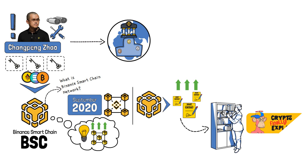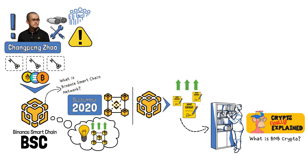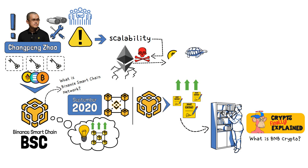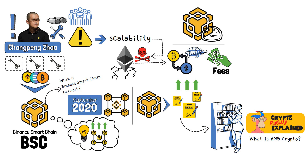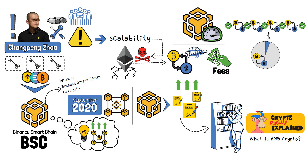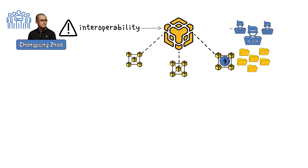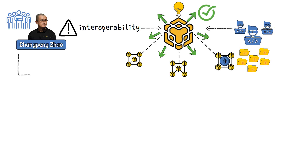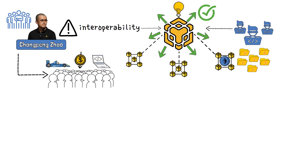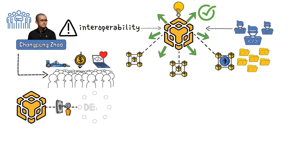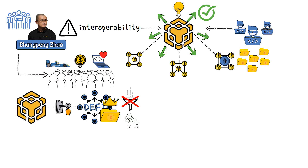One of the significant problems CZ and the Binance team aimed to solve was the issue of scalability. Ethereum, while groundbreaking, was grappling with scalability challenges, resulting in slow transaction speeds and high fees. BSC stepped in as a high-performance blockchain, capable of processing transactions at lightning speed and at a fraction of the cost. CZ and his team also recognized the importance of interoperability — they wanted BSC to interact with other blockchains, including Ethereum, seamlessly. This allowed developers to migrate their existing projects to BSC without a hitch. The Binance Smart Chain opened up new horizons for DeFi projects, enabling them to thrive without the constraints of congestion and high gas fees.